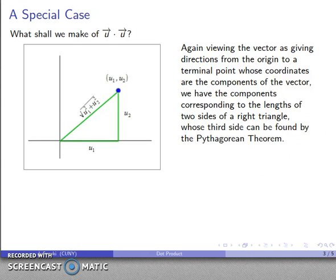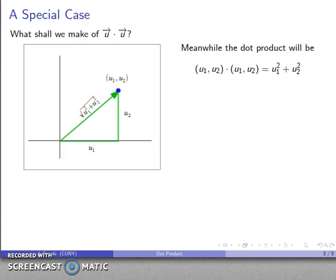And I know what that third side is. I can find the third side because I know the Pythagorean theorem. Meanwhile, when I take a look at the dot product between the two vectors, I'll multiply the corresponding components: u1 times u1, that's u1 squared; u2 times u2, that's u2 squared. I'll add them together and I end up with the dot product. Well, the thing to notice here is that my hypotenuse, square root of u1 squared plus u2 squared, is the same as the square root of the dot product.